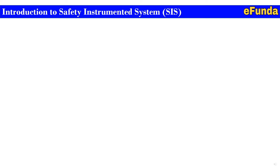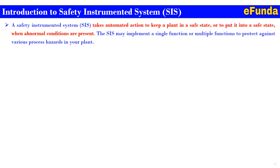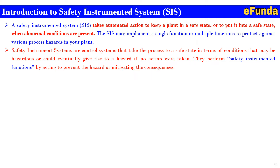A Safety Instrumented System (SIS) takes automated action to keep a plant in a safe state, or to put it into a safe state when abnormal conditions are present. The SIS may implement a single function or multiple functions to protect against various process hazards. It is a control system that takes the process to a safe state under conditions that may be hazardous or could eventually give rise to a hazard if no actions were taken.